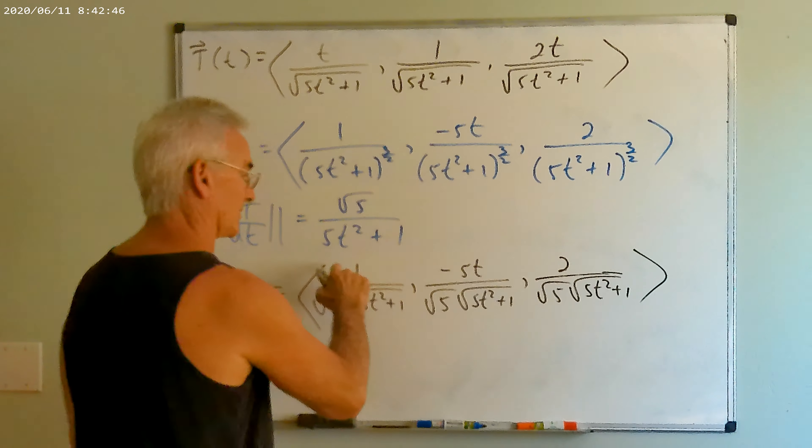Finally, the unit normal vector is found by multiplying dT/dt by the reciprocal of its length, giving something quite complex: one over (√5 · (5t²+1)), negative 5t over (√5 · (5t²+1)), and 2 over (√5 · (5t²+1)). Checking that this is a unit vector — since the denominators are the same, we only need to take the sum of the squares of the numerators to confirm it equals one.